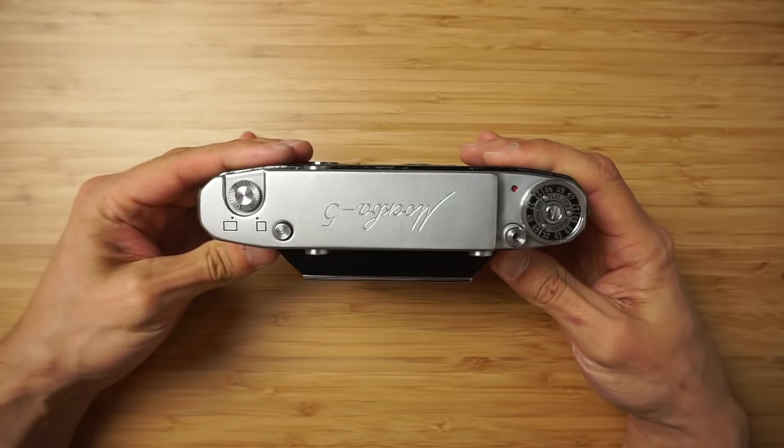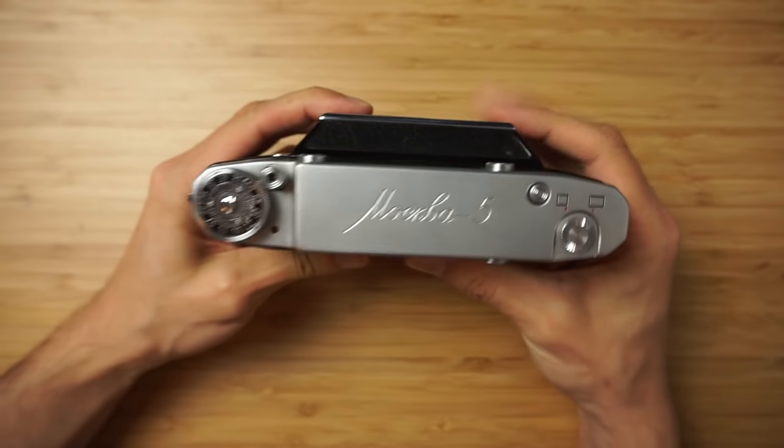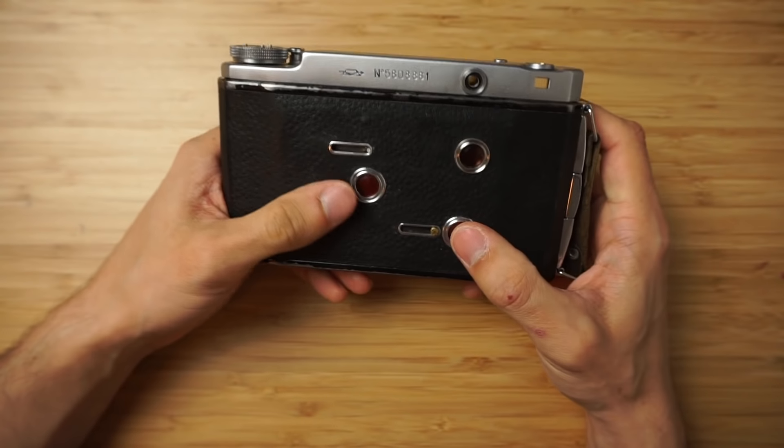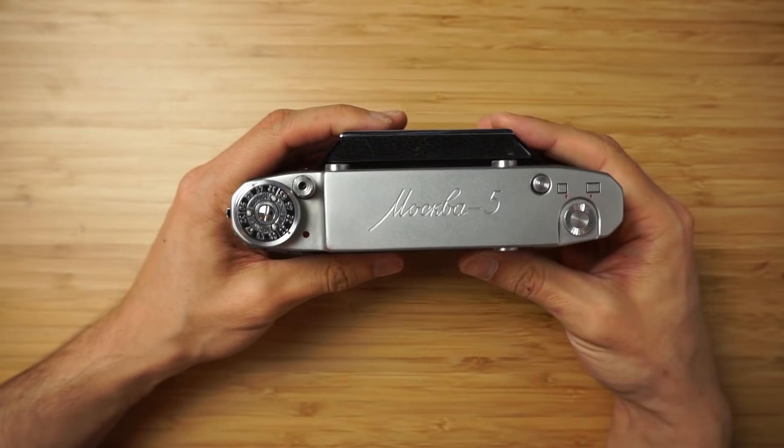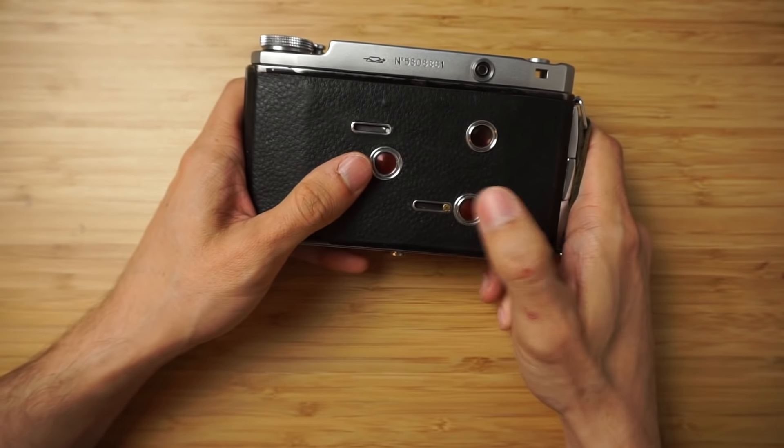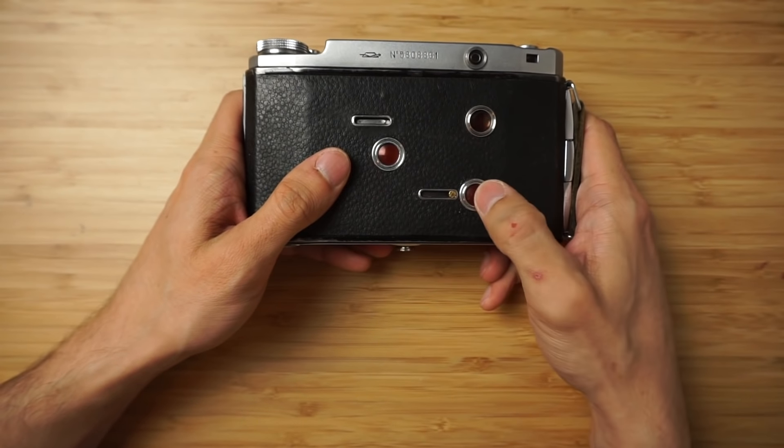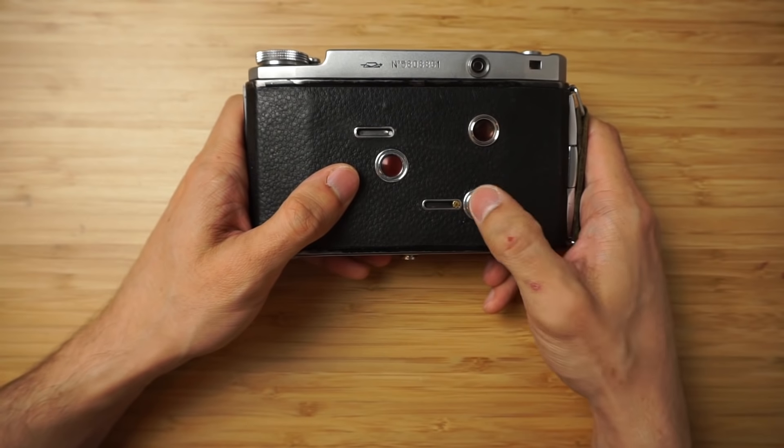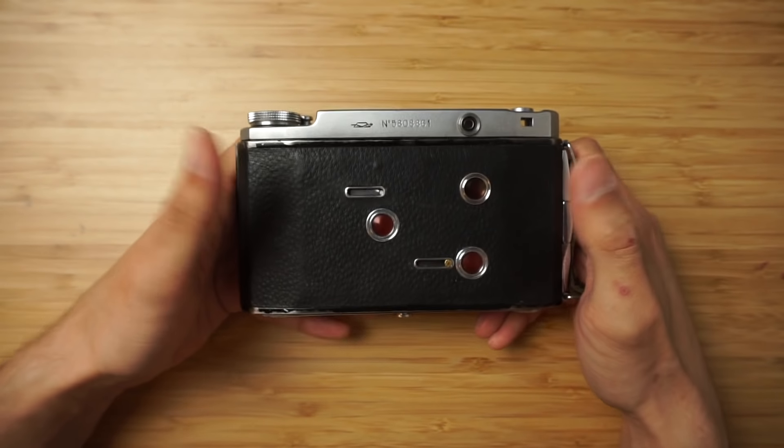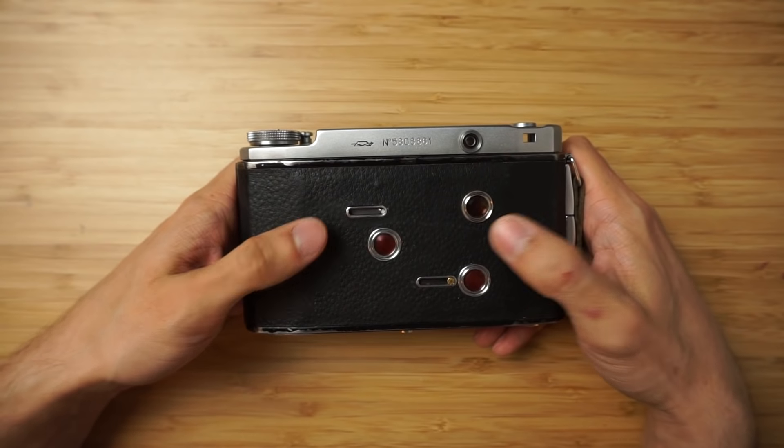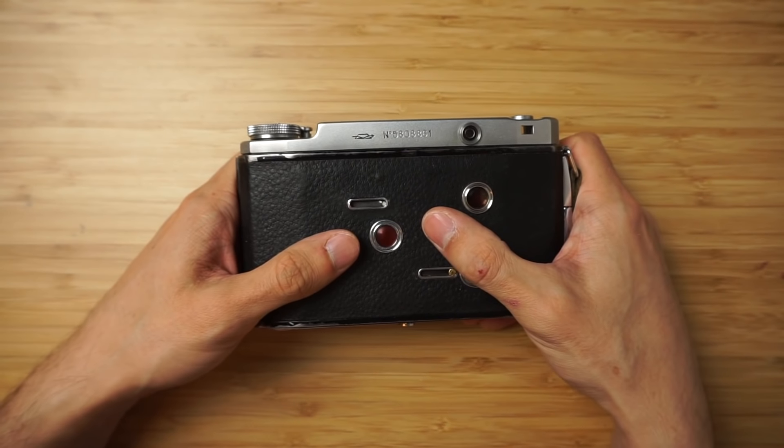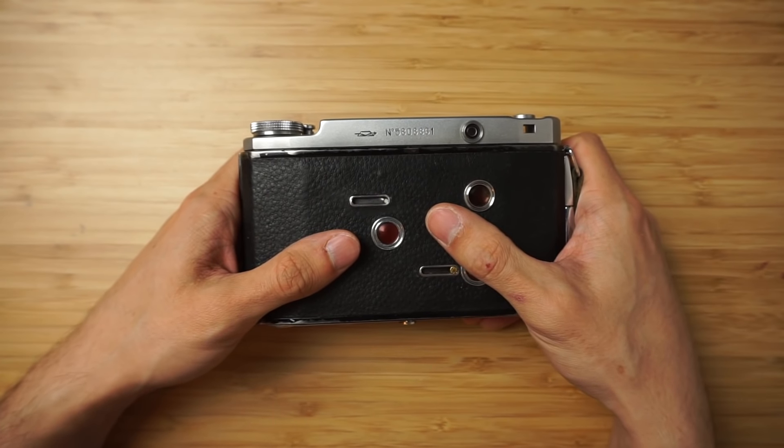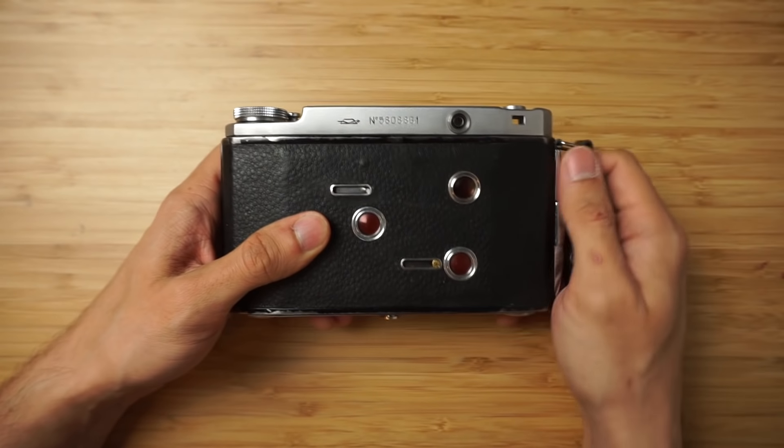The beauty of the folder like this Moskva 5 is that it's not automatic, meaning that you should always peek into the window to see on which frame you are. Which means that you can always control it no matter the thickness of your film.